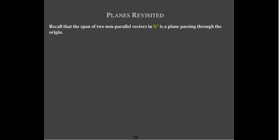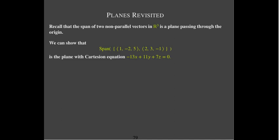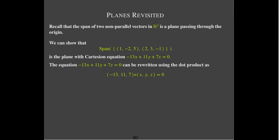Now let's shift gears and look at planes again using our dot product. A plane passing through the origin represents the span of two non-parallel vectors in R3. For example, if you have two vectors with components 1, −2, 5 and 2, 3, −1, we can derive a Cartesian equation. One of those Cartesian equations would be −13x + 11y + 7z = 0. It equals 0 because the plane passes through the origin — when x, y, and z equal 0, of course it equals 0.